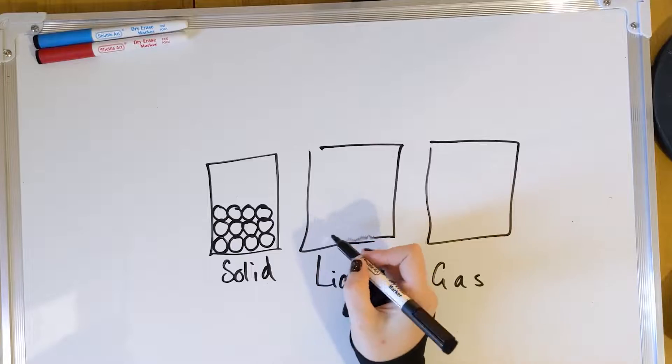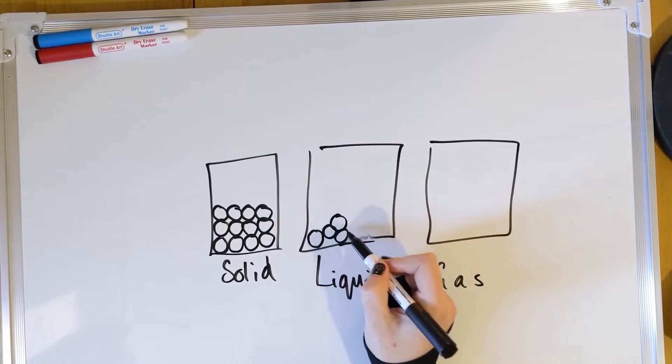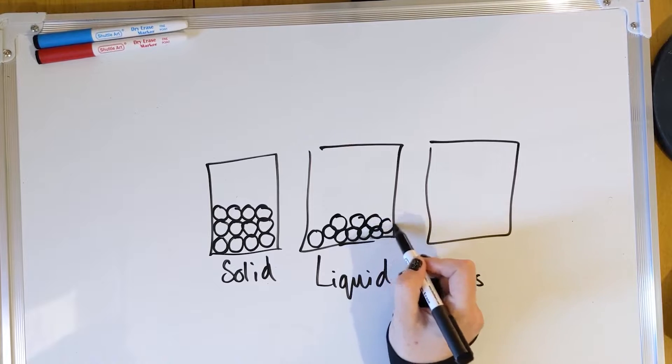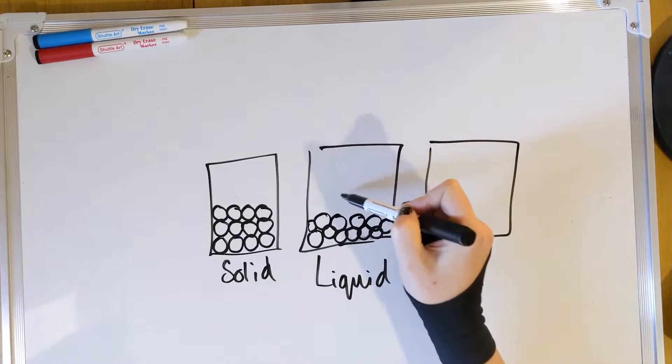In a liquid, you have particles mostly touching, but they aren't arranged in rows — the particles are free to move around. There's lots of overlapping. The biggest mistake people make is drawing the liquid in the middle like it's floating. Because on Earth we have gravity, you need to put them at the bottom.